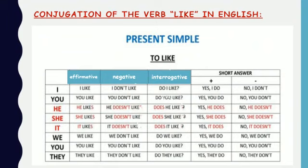Now let's move on to the negative form. The structure is: subject + auxiliary + verb. I don't like, you don't like, he doesn't like, she doesn't like, it doesn't like, we don't like, you don't like, they don't like.